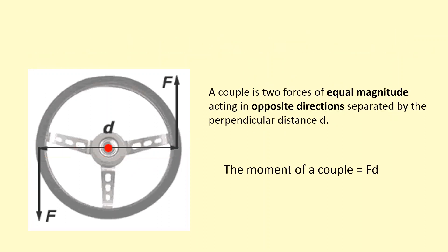This is what we call a couple. A couple is two forces of equal magnitude acting in opposite directions separated by some perpendicular distance d. The moment of a couple is F times d. That's the total turning effect from a couple.